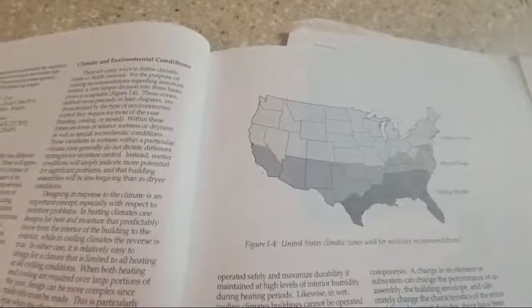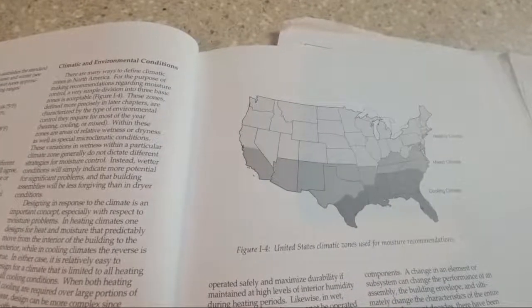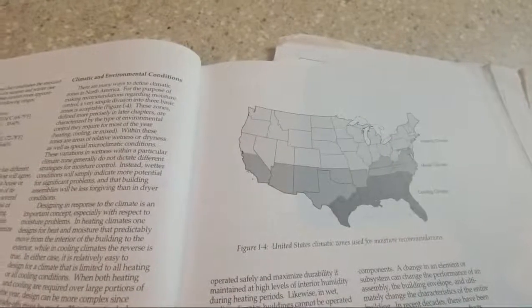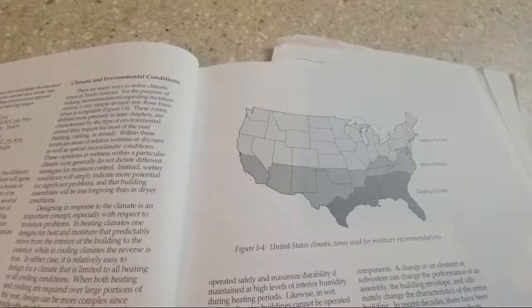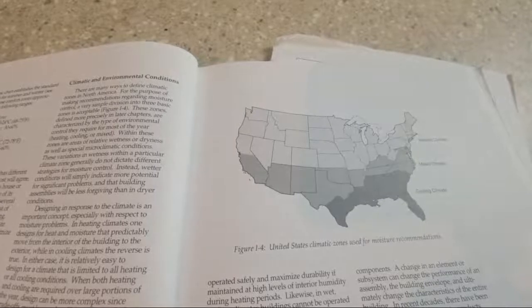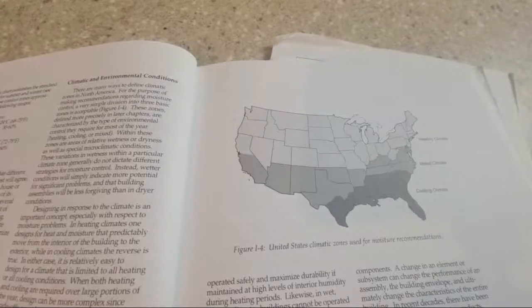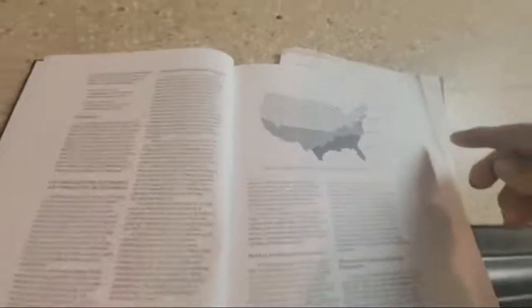This map is a rough map, and there are different things that happen. When you do your crawl space, you should first figure out where you're living and then how your house is designed and how you're going to properly condition or not condition your crawl space.